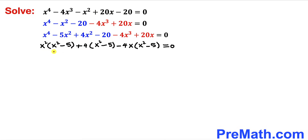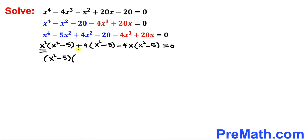Now let's make an observation: we can see (x² minus 5), (x² minus 5), and (x² minus 5) are common across the board. So I'm going to factor out (x² minus 5), and we end up with (x² minus 5)(x² + 4 minus 4x) equals 0.